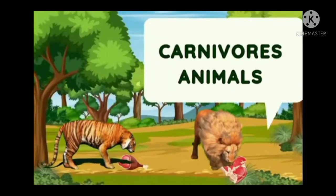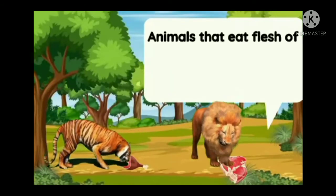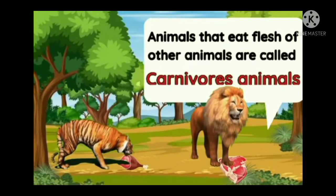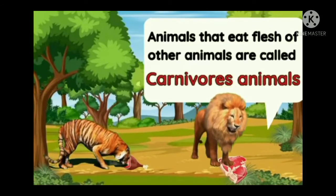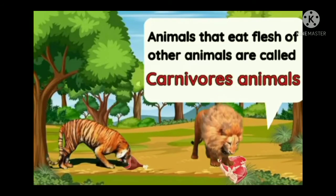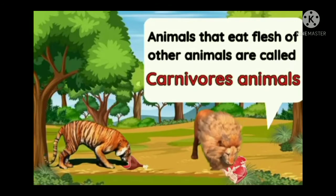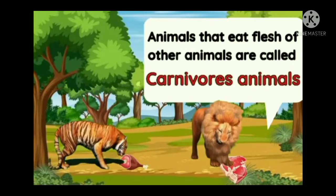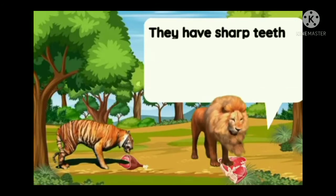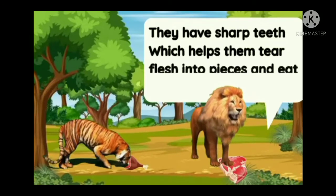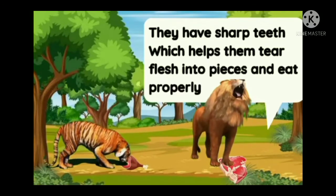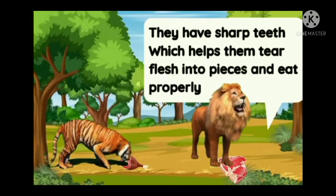Carnivore animals. Animals that eat the flesh of other animals are called Carnivore animals. They have sharp teeth which helps them tear flesh into pieces and eat properly.